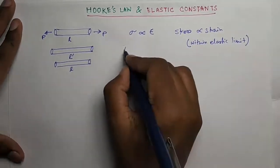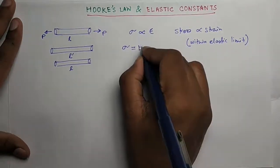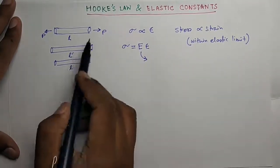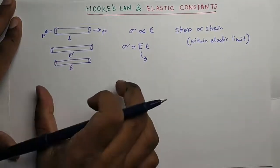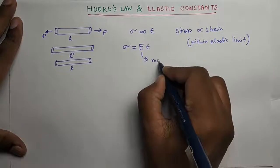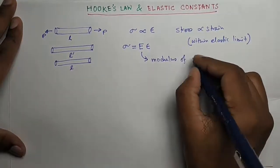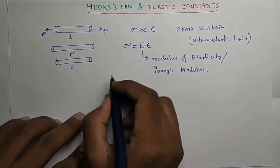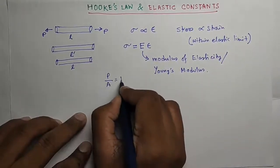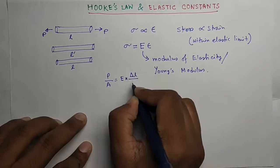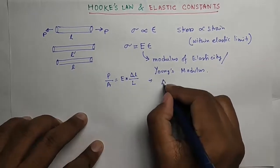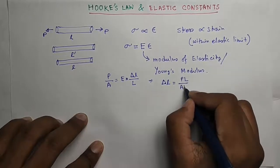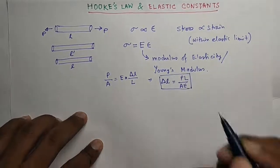So we can write sigma equals to some constant E times epsilon. This constant E for direct stress, that is axial stress, is called modulus of elasticity or Young's modulus. You can write sigma as P by A equals to E into del L by L. So del L or this change in length can be written as PL by AE. This is a very important formula, keep it in your mind.